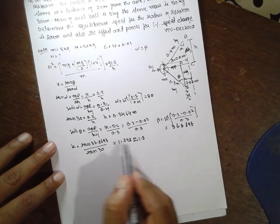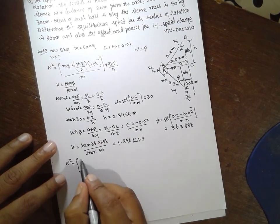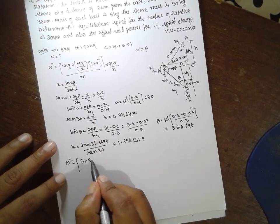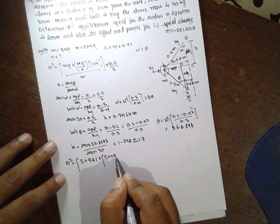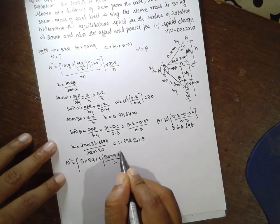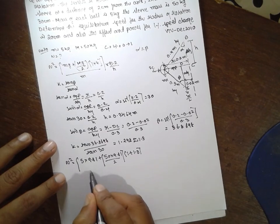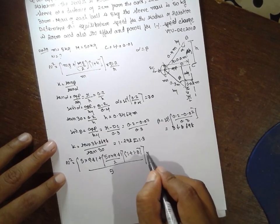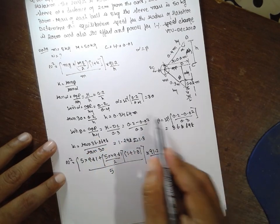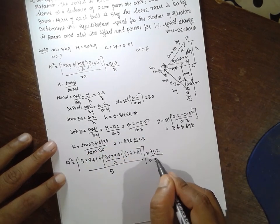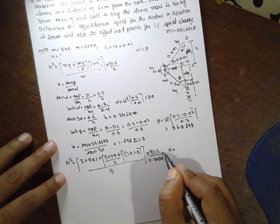Now substitute value here in order to get n square is equal to, what is m? 5 into 9.81 plus 50 into 9.81 divided by 2 into 1 plus 1.3 divided by 5 into 91.2 divided by h is nothing but 0.3464. After doing the root...